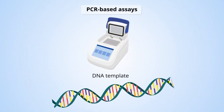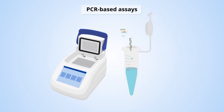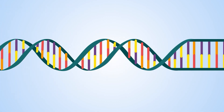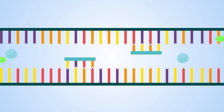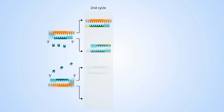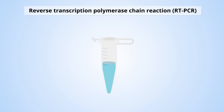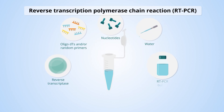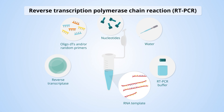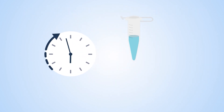PCR-based assays amplify a DNA region of interest, initiated by the binding of short complementary DNA probes called primers. The amplified DNA is detected as an increasing signal from dyes that are incorporated into the newly produced DNA strands. They have much higher resolution than any of the techniques previously discussed. An extension of PCR that allows detection of RNA and thus assessment of gene expression is RT-PCR, or reverse transcription polymerase chain reaction, where a reverse transcriptase converts RNA into complementary DNA.